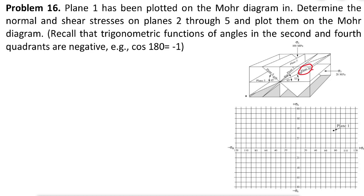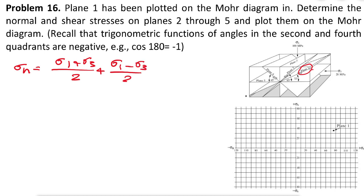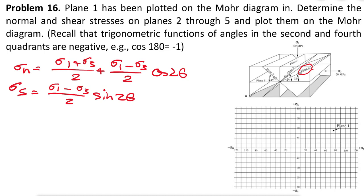Let's start with plane 2. Before getting into that, we need to write down the equations that relate normal stress and shear stress to principal stresses. The principal stresses are sigma 1, sigma 2, and sigma 3, and the normal and shear stresses are sigma n and sigma s. We know sigma n equals (sigma 1 + sigma 3)/2 + (sigma 1 - sigma 3)/2 × cosine(2θ), and sigma s equals (sigma 1 - sigma 3)/2 × sine(2θ). Sigma 1 is 100 MPa and sigma 3 is 20 MPa.